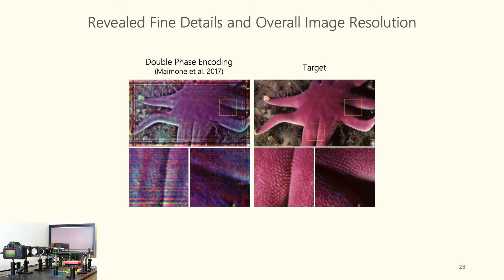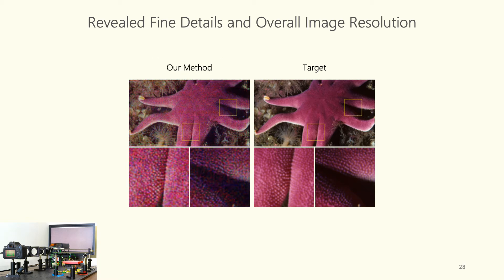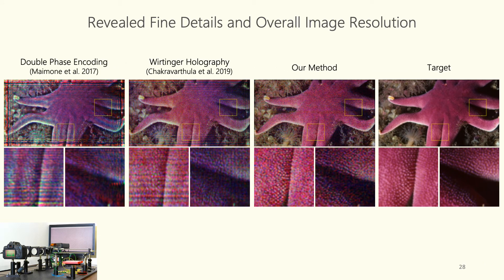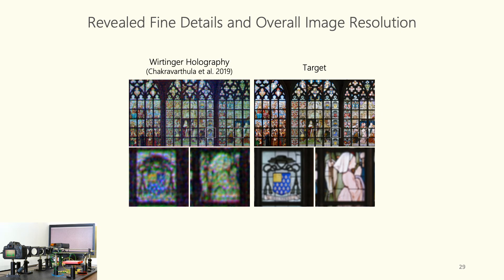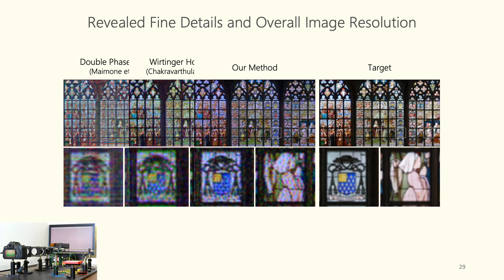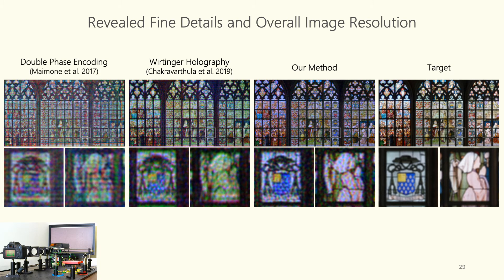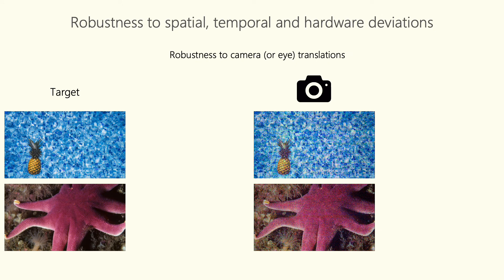In further examples comparing double-phase encoding, Wirtinger holography, and our method, you can see how the details on the skin of a starfish are revealed and overall image resolution is improved using our learned hardware-in-the-loop phase retrieval. In an extreme case with a church window, very fine details are revealed with our method. Note that all these images are captured on a real holographic display, and our method produces state-of-the-art holographic reconstructions on real display hardware.